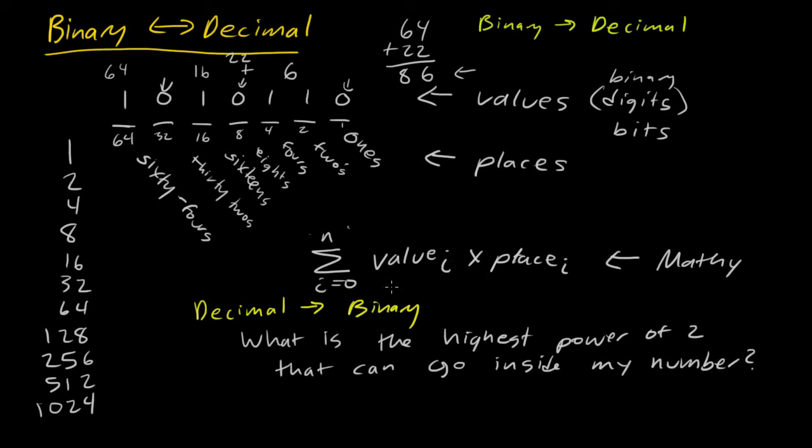What is the highest power of 2 that can go inside my number here? That's what we ask ourselves repeatedly. In this case, I'll start with 86. 128 is larger than 86, but 64 is the highest power of 2 that's still less than 86. So I would say, okay, well, I have 86, I'll subtract away 64. What I have left is going to just be 22.